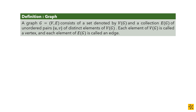This brings us to the definition of a graph, because now we know what a set is — a well-defined collection of objects. A graph has a set of components (the vertices or nodes) and a set of relationships (the edges or links). We need to combine that into a mathematical definition.